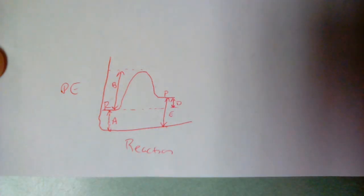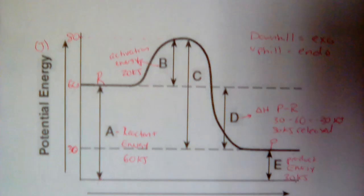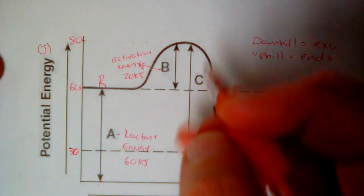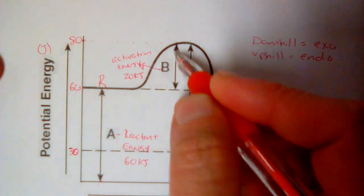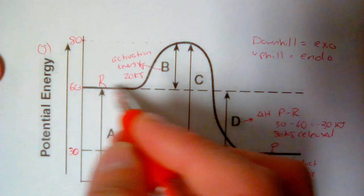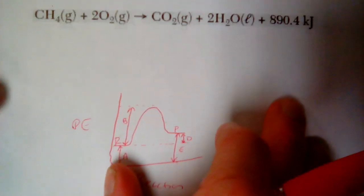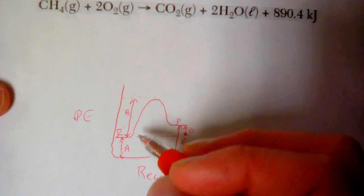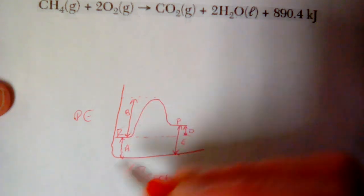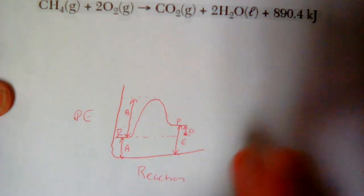But there will be a few things that you'll notice that are different. When I look at the activation energy in the exothermic reaction, I can see that it's pretty small because my reactants are relatively high. They're close to the peak already. When I look at an endothermic reaction, that activation energy is much, much larger because my reactants are lower.